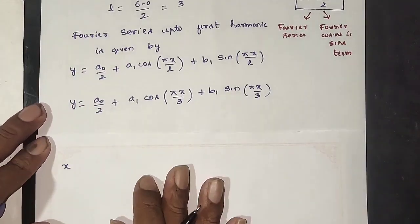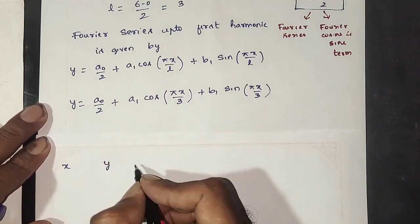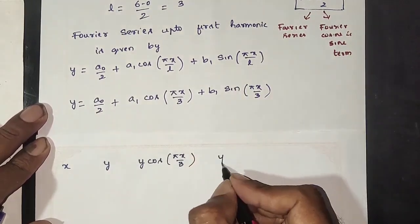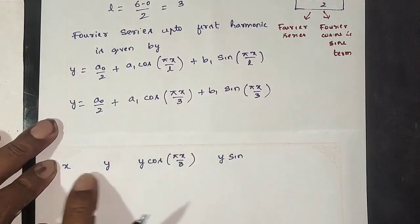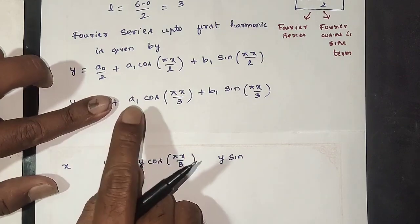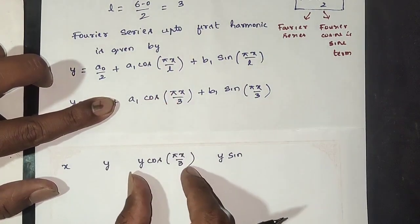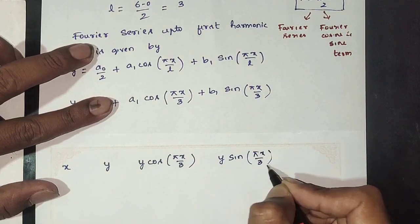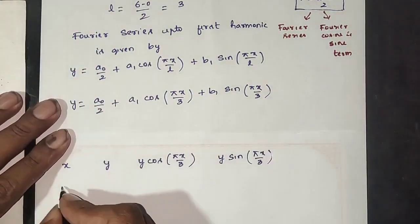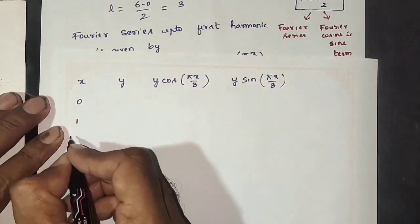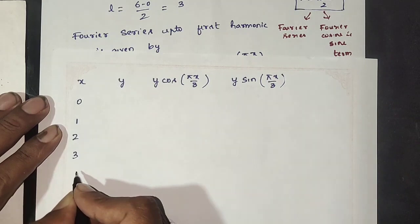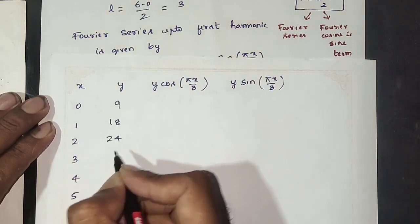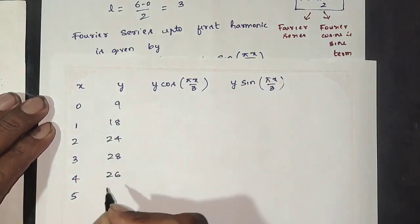The x values in the table are: 0, 1, 2, 3, 4, 5 — that is 5 values (n = 6 points). The corresponding y values are: 9, 18, 24, 28, 26, 20.